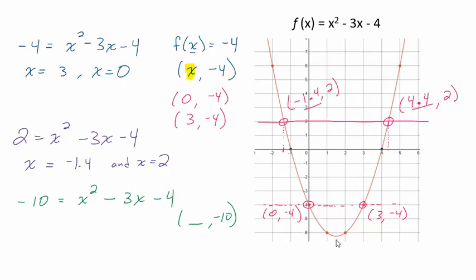Where it's asking for what value of x has a y value of negative 10 on this graph. Got it? There aren't any, right? So, I mean, I kind of didn't go down to negative 7, negative 8.